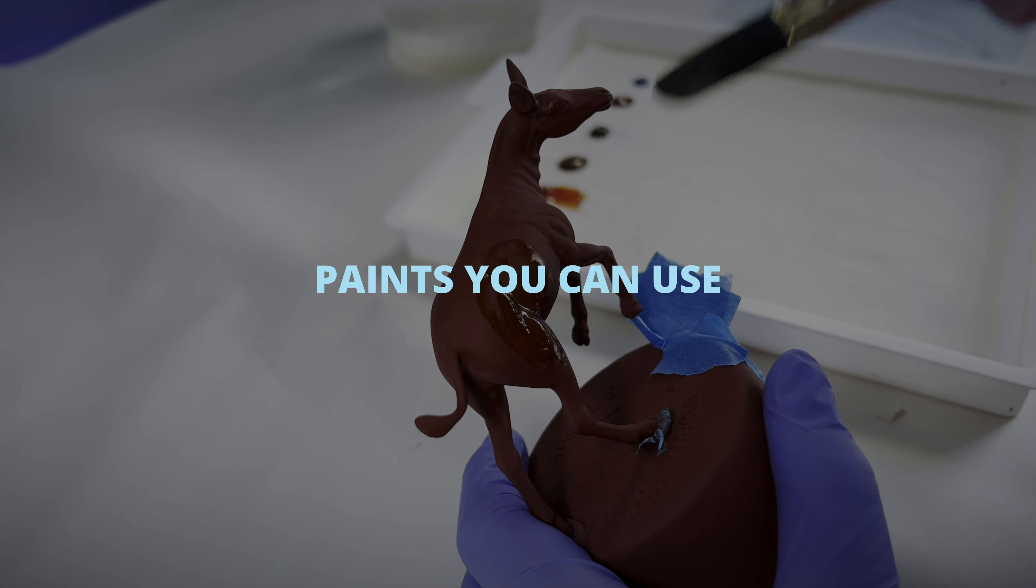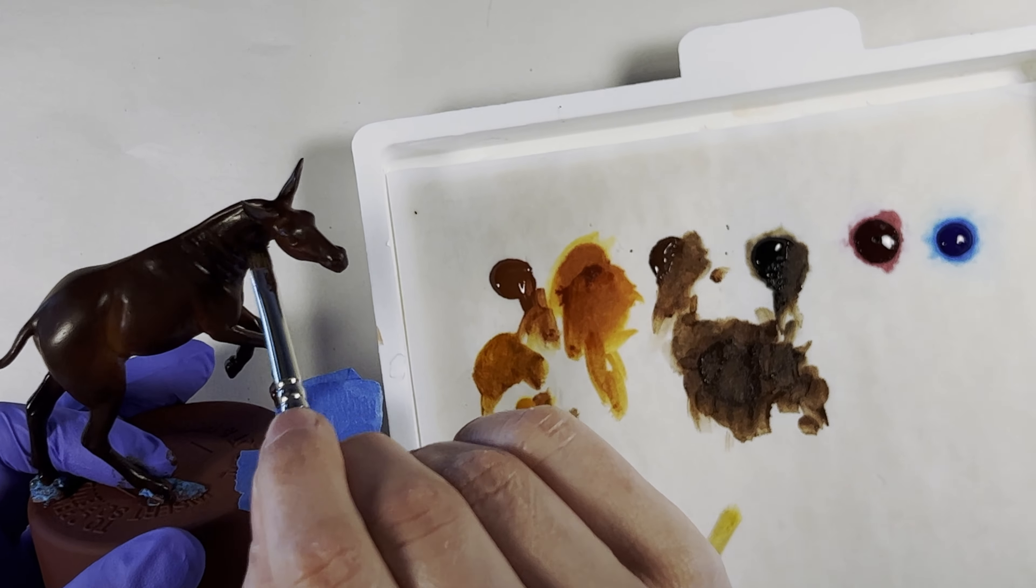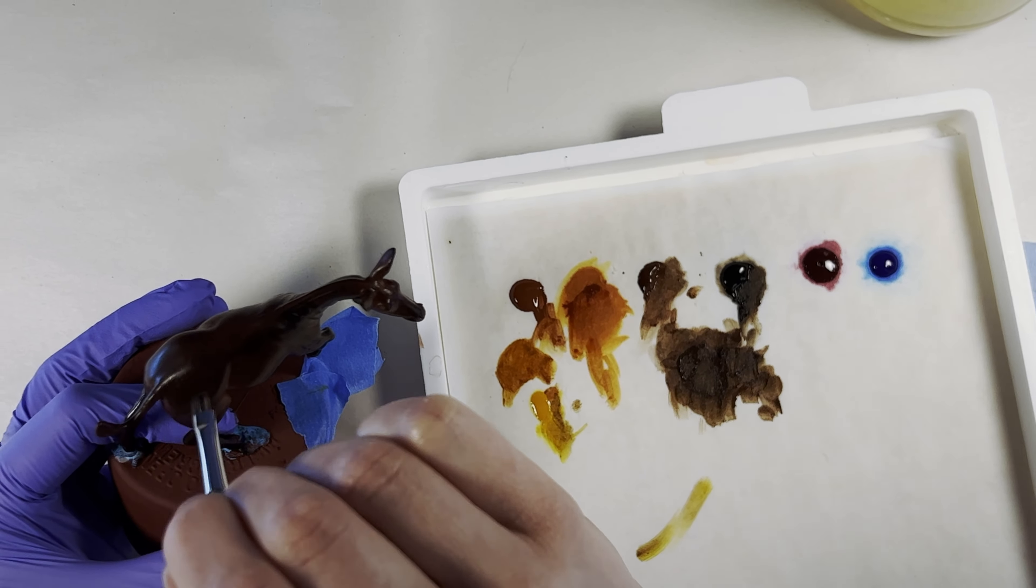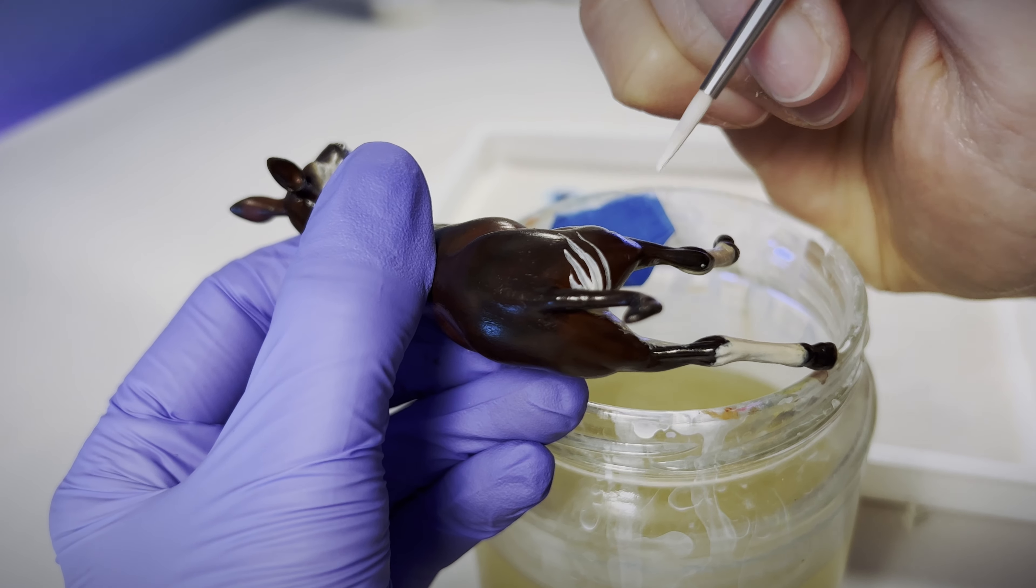And now we're ready to paint! After the primer is cured, you can paint Milliput with almost any type of paint that you prefer, such as acrylic, enamel, or oil paints.